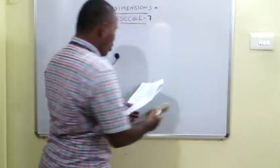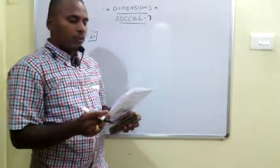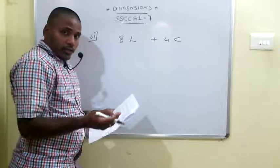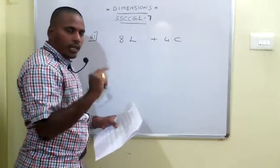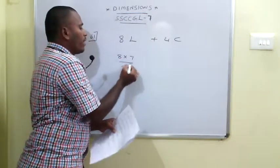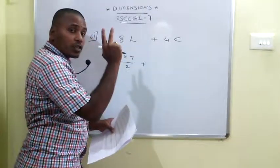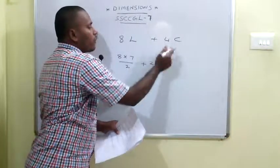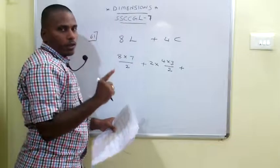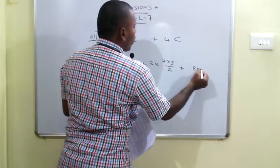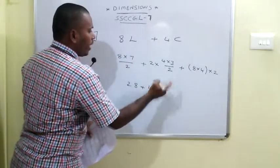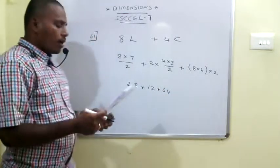The 61st problem: The greatest possible number of intersection points of 8 straight lines and 4 circles. Every 2 lines give 1 point: C(8,2) = 8×7/2 = 28 points. Every 2 circles give 2 points: C(4,2) × 2 = 6 × 2 = 12 points. Each line intersecting each circle gives 2 points: 8 × 4 × 2 = 64 points. Total = 28 + 12 + 64 = 104.